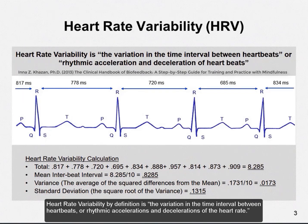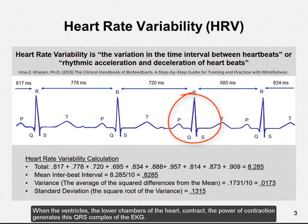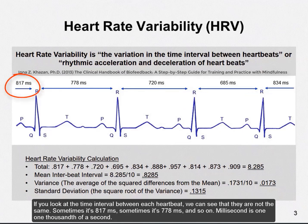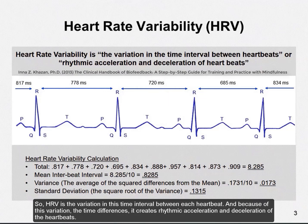Heart rate variability, by definition, is the variation in the time interval between heartbeats, or rhythmic accelerations and decelerations of the heart rate. When the ventricles — the lower chambers of the heart — contract, the power of contraction generates the QRS complex of the EKG. If you look at the time interval between each heartbeat, you can see that they are not the same. Sometimes it's 817 milliseconds, sometimes it's 778 milliseconds, and so on. A millisecond is one one-thousandth of a second. HRV is the variation in this time interval between each heartbeat, and because of this variation, it creates a rhythmic acceleration and deceleration of the heartbeats.